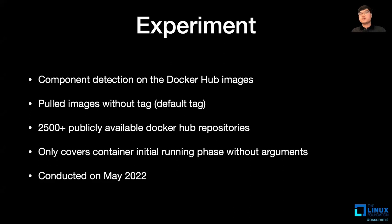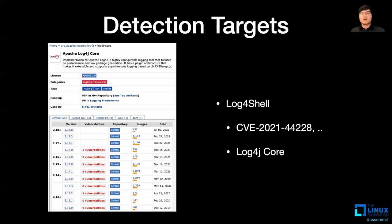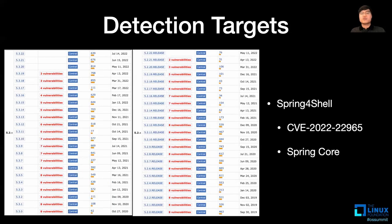Using the implemented tool, we searched for components related to Log4Shell and Spring4Shell from public images on Docker Hub. The experiment was performed by pulling 2,500 public images with the default tag, expected to be the latest. This experiment was conducted in May 2022. We looked for Apache Log4j versions below 2.16 where the Log4Shell vulnerability exists, and Spring Core versions 5.3.0 to 5.3.17 or 5.2.0 to 5.2.19 and earlier. If this version is used in conjunction with JDK 9 or later, it may be vulnerable.